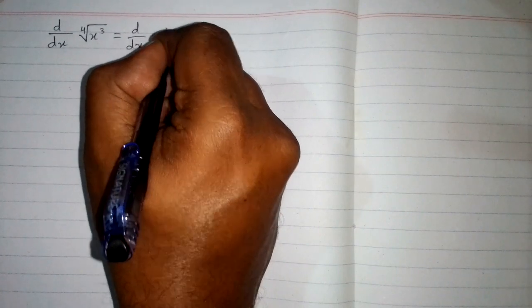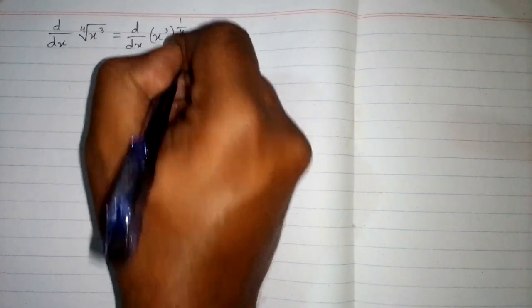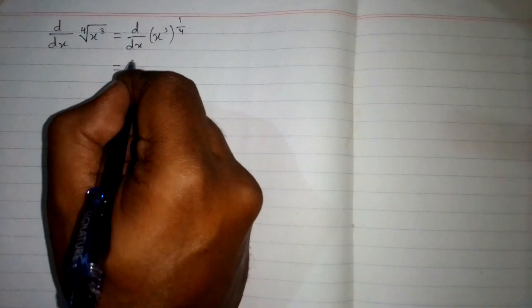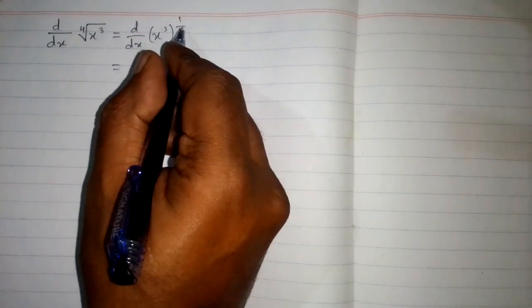In this video we will find the derivative of the 4th root of x cubed. First, the 4th root means to the power 1/4, so we have d/dx of (x³)^(1/4).